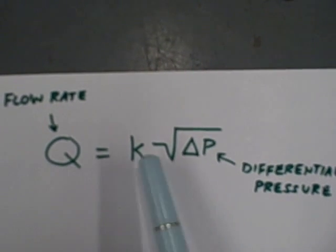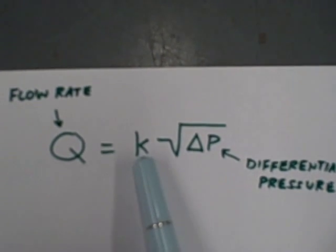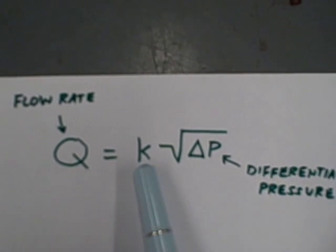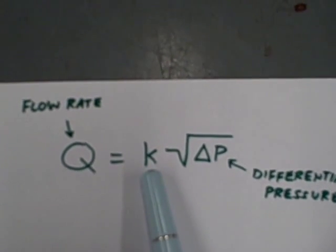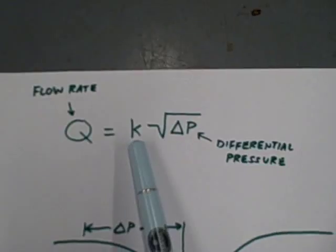We have a flow rate here, differential pressure, and a constant of proportionality that we can calculate given any concrete measurements on any given orifice plate or venturi tube.